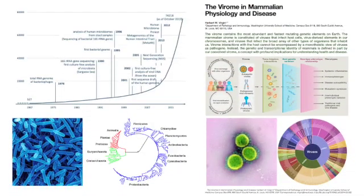The size of the mammalian virome is actually not known exactly. Although our own cells are outnumbered about tenfold by our bacterial microbiome, the number of viruses may be tenfold higher still. Human feces alone contain approximately 10^8 to 10^9 viruses per gram.